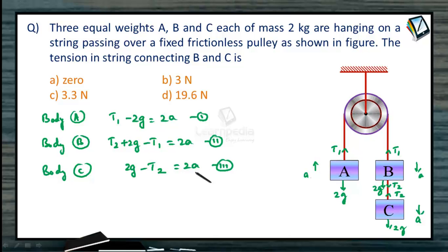All the three masses are the same masses. Therefore, the masses we have taken as 2A. So, now adding equation 1 and equation 2, T1 can be eliminated. 2g goes up directly from 1 and 2. What do you get? T2 is equal to 4A. Let us call this equation as 4.